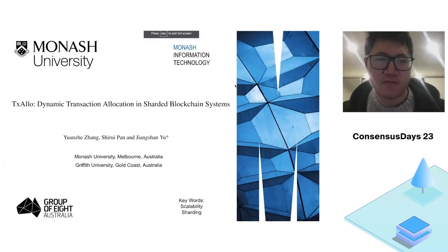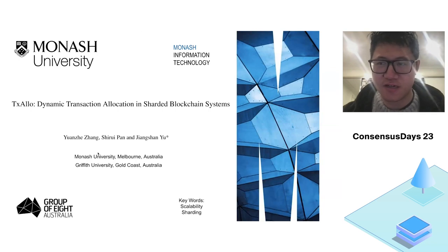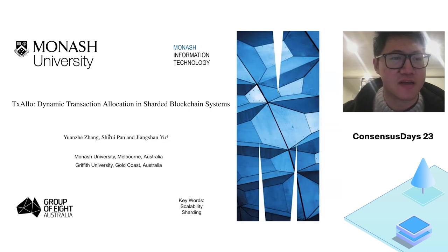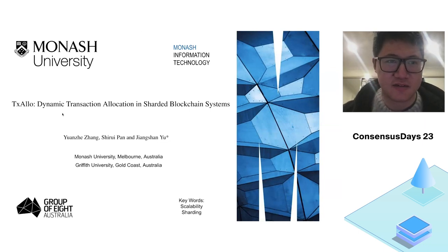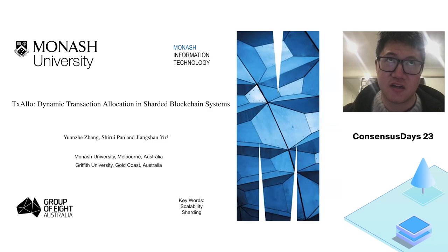Hello everyone. My name is Yuan Zhe Zhang and I'm a second year PhD student at Monash University, Australia. I'm very happy to be here to present our recent research work. The title of our work is 'Transaction Allocation in Sharded Blockchain,' and the key focus of this work is scalability, but in another direction — the sharding solution rather than layer two solutions.